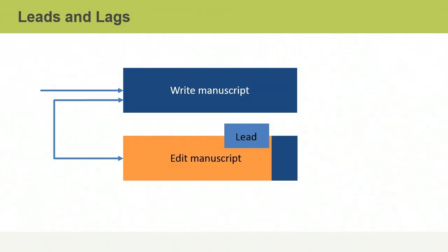Two more tools and techniques for developing the schedule are leads and lags and schedule compression. Since they are related, they'll be covered together. A lead occurs when an activity can begin before a predecessor activity completes. For example, an editor may edit a manuscript chapter by chapter instead of waiting for the entire manuscript to be completed to save time. The start-to-start relationship between these activities creates a lead.